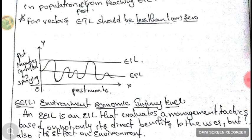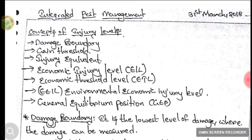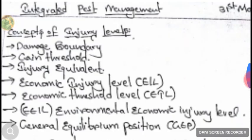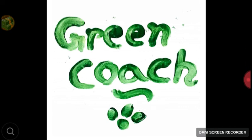In summary, in today's Green Coach class on Integrated Pest Management, we learned about the concepts of injury levels: Damage Boundary, Gain Threshold, Injury Equivalent, EIL (Economic Injury Level), ETL (Economic Threshold Level), EEIL (Environmental Economic Injury Level), and GEP (General Equilibrium Position). Thanks for watching. Please like, subscribe, and share our channel, and leave suggestions in the comment section. This is Varsha Subbarav along with Manu, signing off.